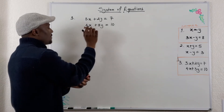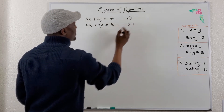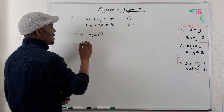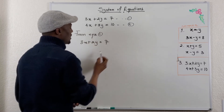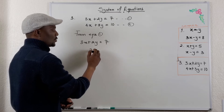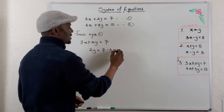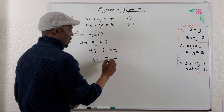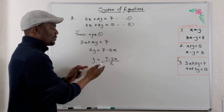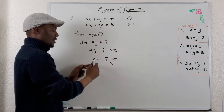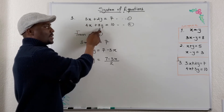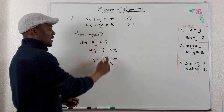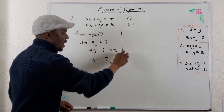This is equation 1 and this is equation 2. Since 2 is the smallest coefficient, I'm going to try and isolate y. From equation 1 — 3x plus 2y equals 7 — if I subtract 3x from both sides I get 2y equals 7 minus 3x. Dividing both sides by 2, I get y equals (7 minus 3x) divided by 2. This is what I'm going to plug into the other equation.